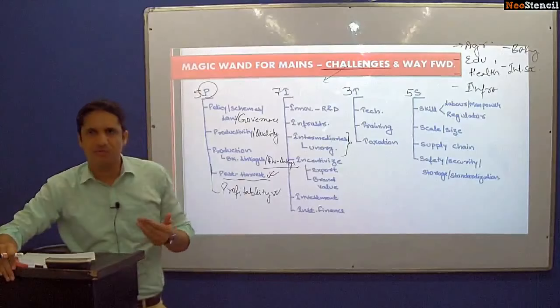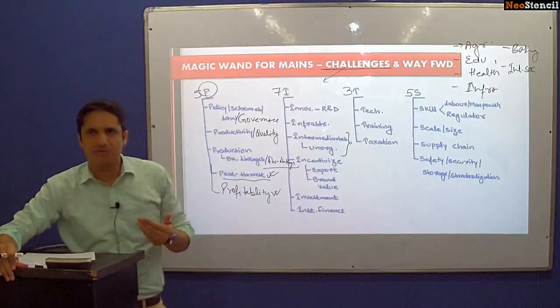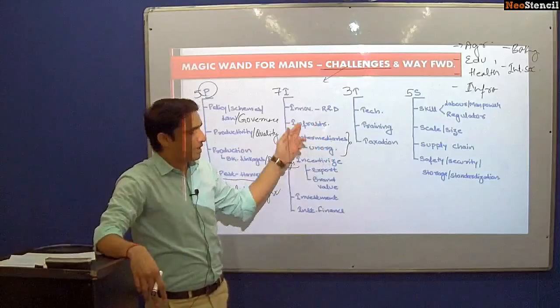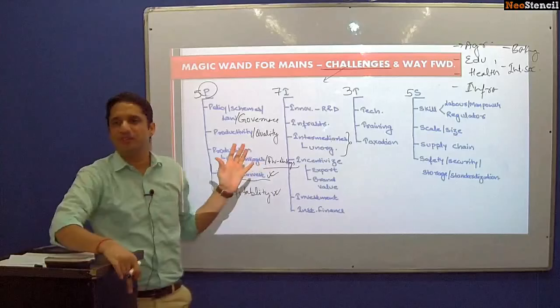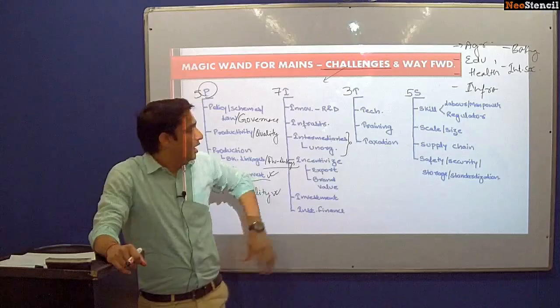The bargaining power of the farmer is not much — illiterate farmers are there — and that is creating a problem of intermediaries specifically in the APMC sector, which is decreasing the value realization of the agriculture sector. The fourth I is incentivize — incentives are less. You need to focus on export and brand value to increase ethnic and tribal foods.